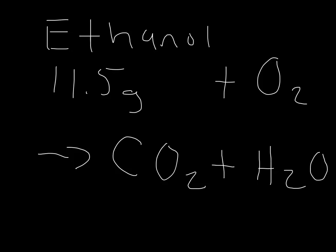Now ethanol contains carbon, hydrogen, and oxygen. What we're going to do in this experimental method is figure out how many grams of carbon, hydrogen, and oxygen are in the original 11.5 grams of ethanol. Once we figure out how much of each of those is in the original ethanol, we can determine the empirical formula of ethanol.